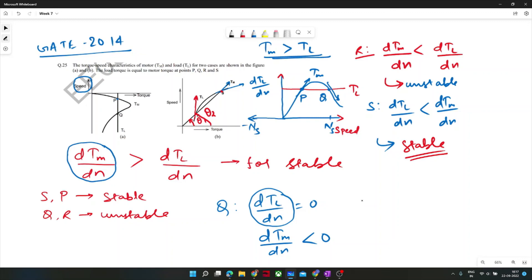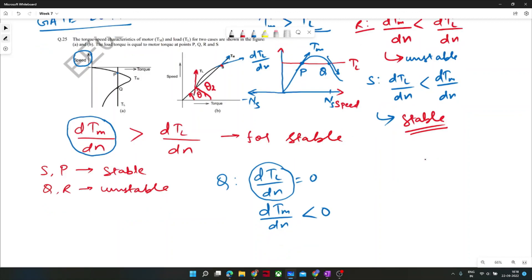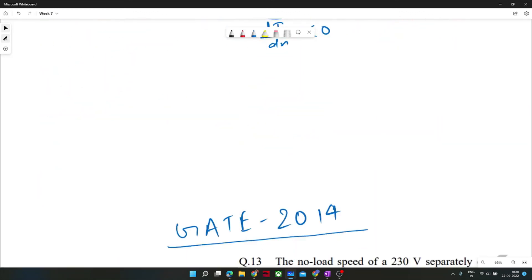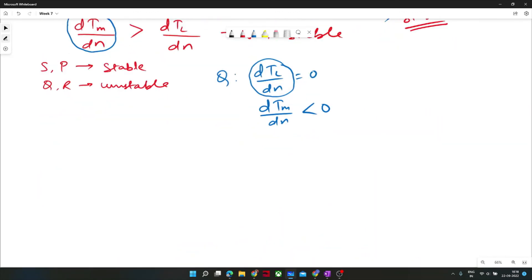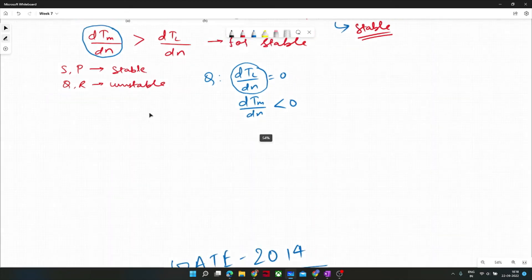Make sure you don't make mistakes or apply intuition in the GATE exam, otherwise you'll get negative marks. Just apply the formula if you know it and get the correct answer. Moving ahead with parallel operation of transformers.